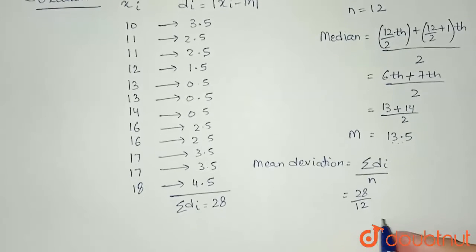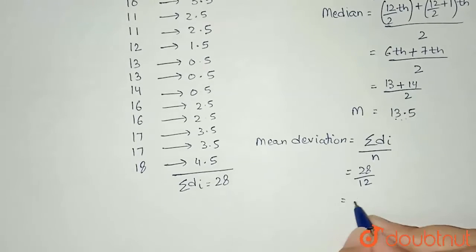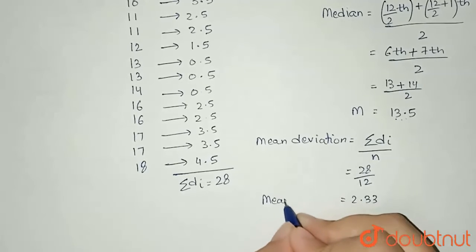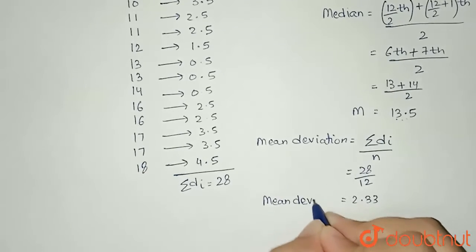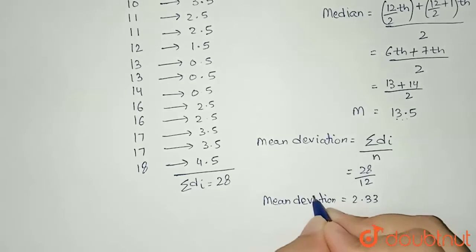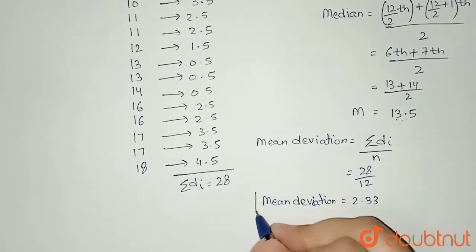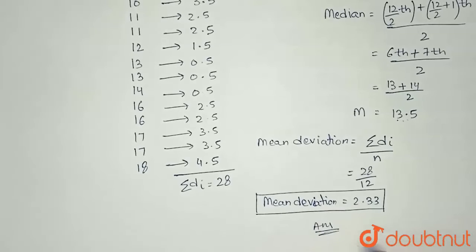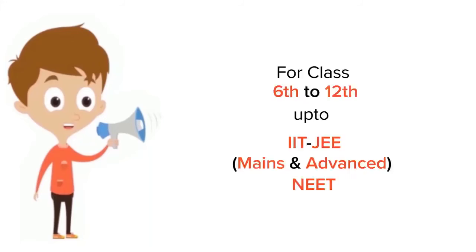And the value for this will come out to be 2.33. So I can write here that mean deviation equals 2.33. So this will be my final answer. Thank you.